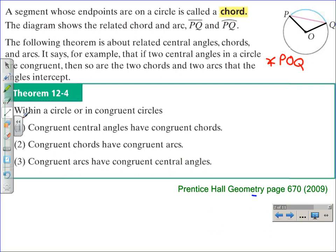The following theorem is about related central angles, chords, and arcs. It says, for example, that if two central angles in a circle are congruent, then so are the two chords and two arcs that the angles intercept.